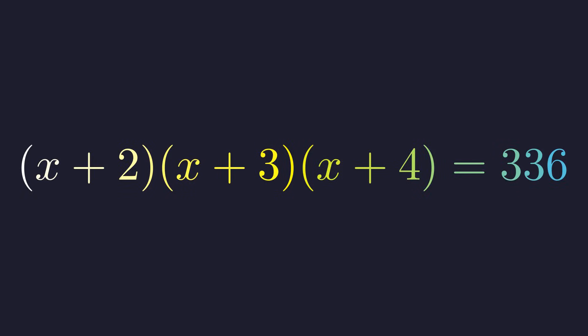Here's an interesting algebra problem: we have the product of three consecutive terms, x plus 2, x plus 3, and x plus 4, and it all equals 336. Now you could multiply this all out and you'd get a cubic equation which can be messy, but there's a much more elegant path and it's hidden in the structure of the problem itself.